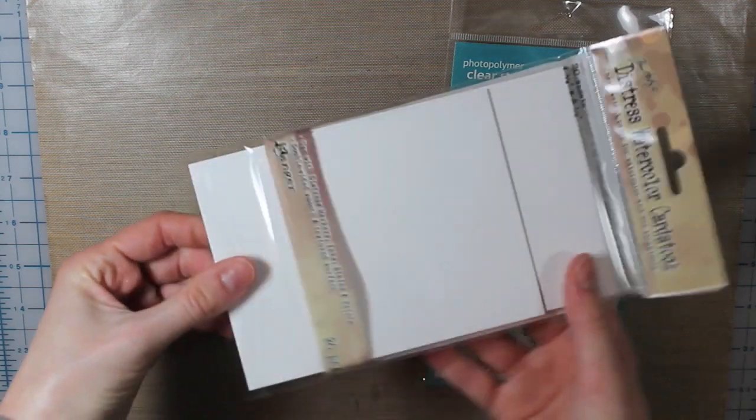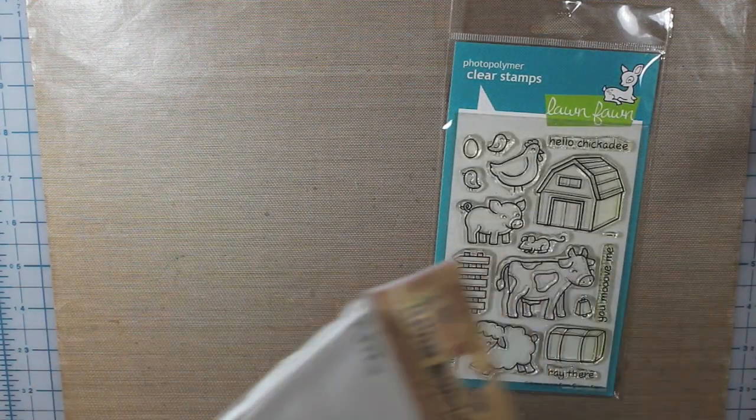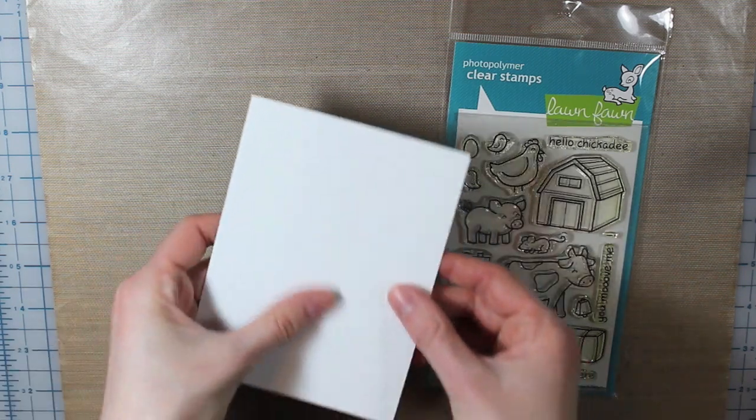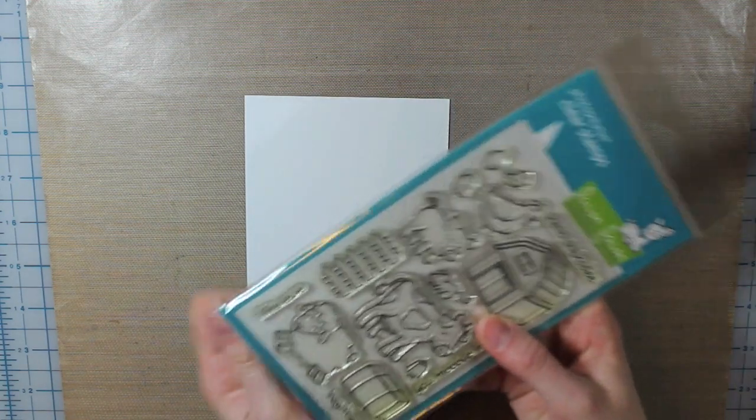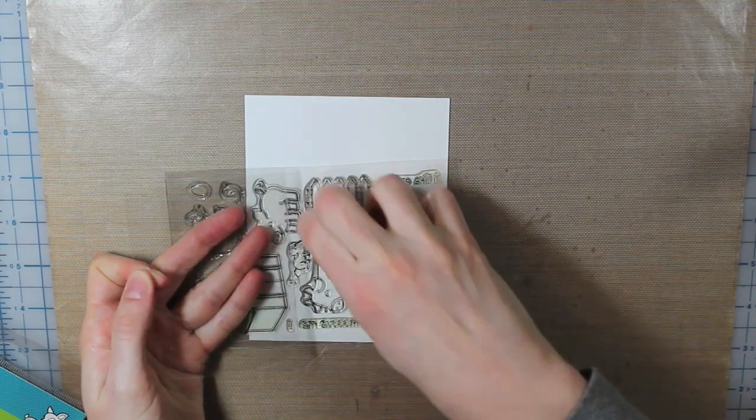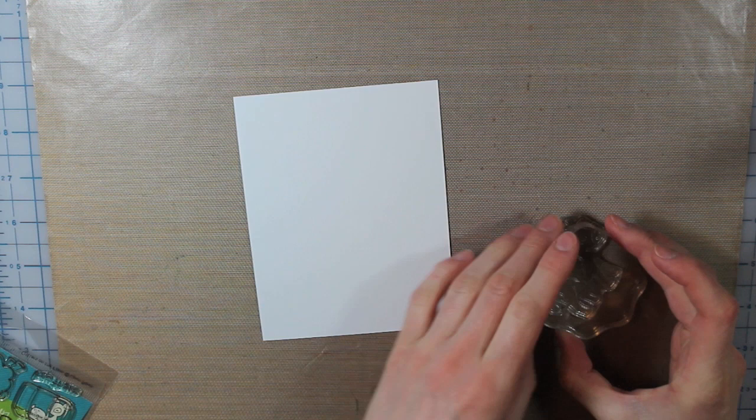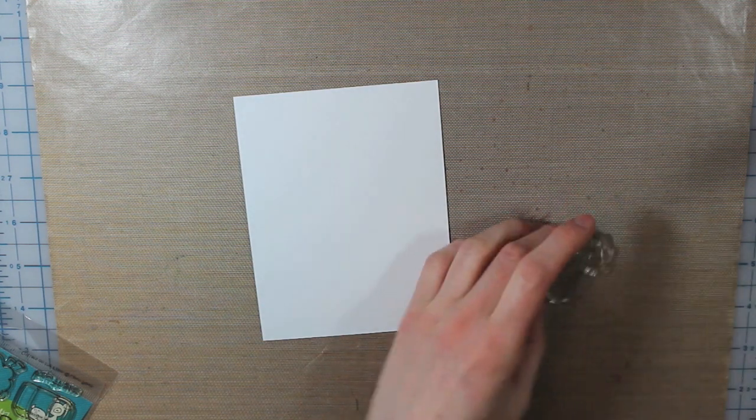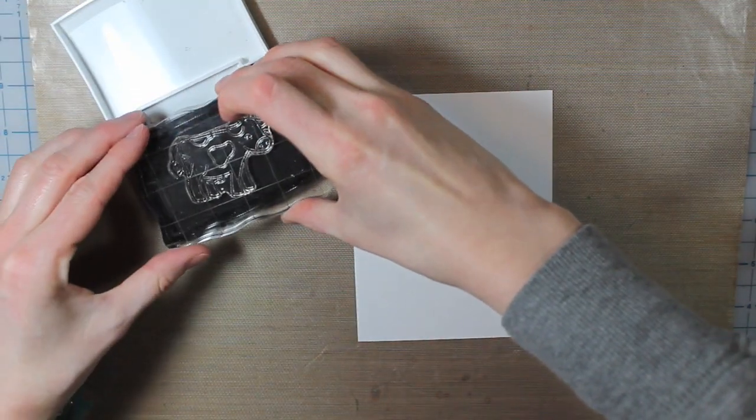I'm going to start with a piece of watercolor cardstock. Usually I use this watercolor cardstock for the background, but I'm actually just going to stamp my image on it today. I'm going to use the smooth side or the flat side for this. I'm choosing the little cow image and putting that on my acrylic block, and then I'm going to stamp this with some VersaFine ink, the black.